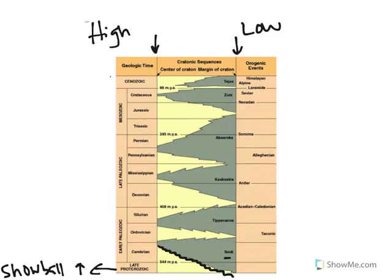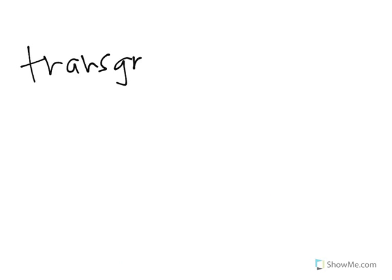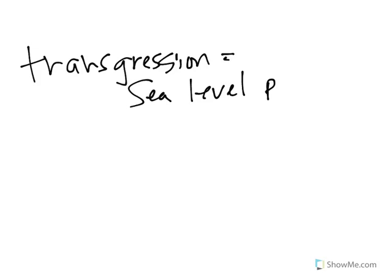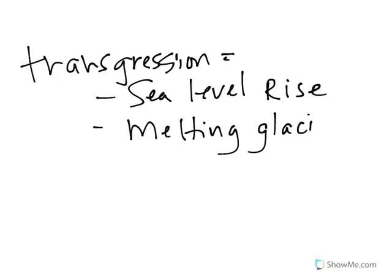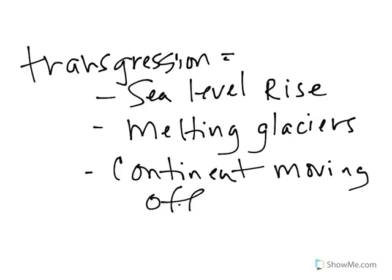Transgression is a sea level rise. And remember, that is caused by melting glaciers. How do we melt the glaciers? We have to have a continent moving off the pole. Because remember, if I don't have a continent over the south or north pole, we cannot establish that big glacier, which means sea level is going to rise.